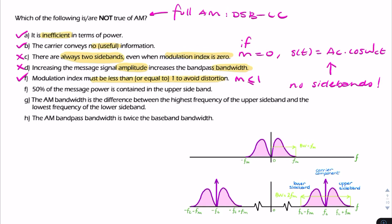The second statement F says 50% of the message power is contained in the upper sideband. Notice it says message power, not signal power. If you consider the message, you could argue that half of the message power is in the upper sideband and half is in the lower sideband. So 50% is in the upper sideband and 50% in the lower sideband. That doesn't mean 50% of the signal power is in the upper sideband, but 50% of the message power is — so that's correct.